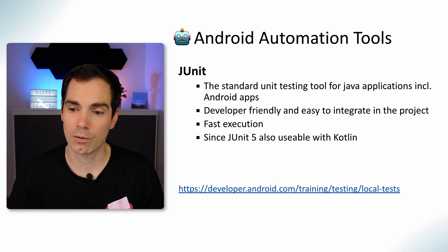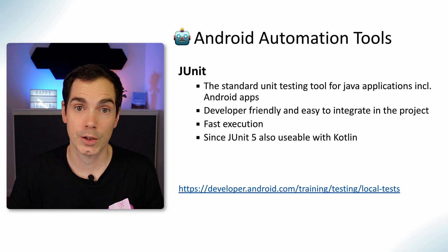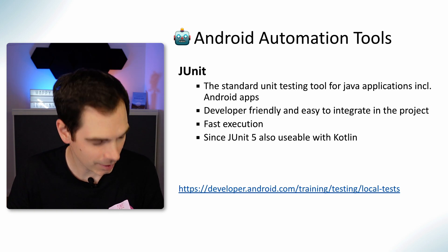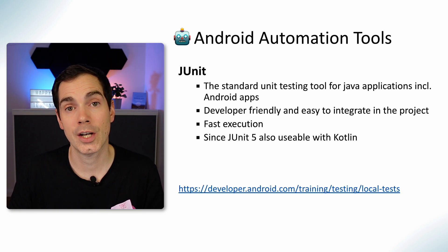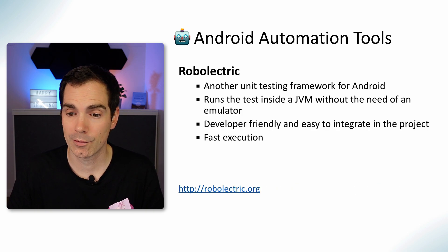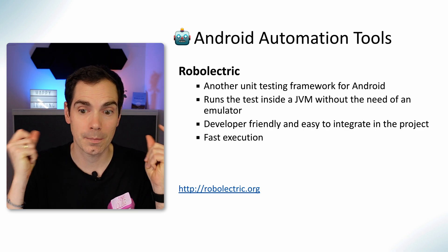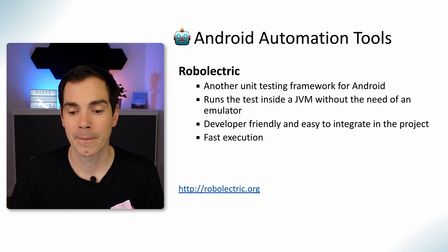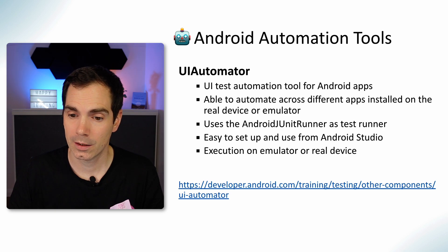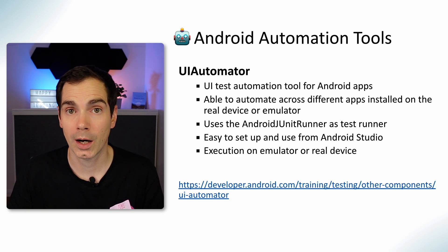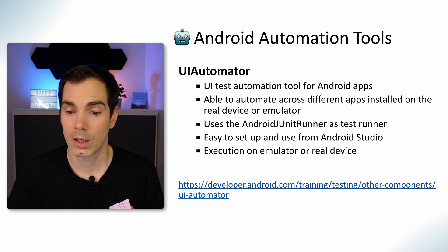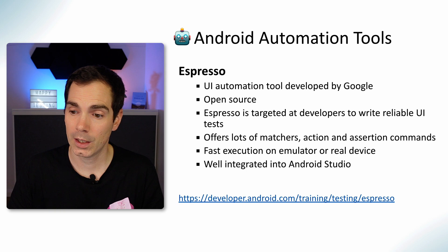On the Android side, we have JUnit for unit testing in Java and Kotlin applications — JUnit 5 supports Kotlin. Robolectric is still valid: it's a unit testing framework for Android that runs inside the JVM without needing an emulator, making it super fast and developer-friendly. UI Automator is part of the Android developer SDK for driving the UI for test automation; it's easy to set up from Android Studio and can be executed on emulators and real devices.